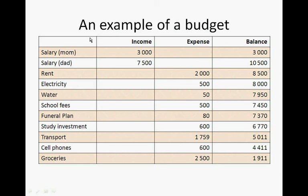So now this is an example of a budget. The mom's salary is 3,000 rand, so the balance is 3,000 rand. The dad's salary is 7,500 rand, so we add the 7,500 to the 3,000 rand to get 10,500 rand.